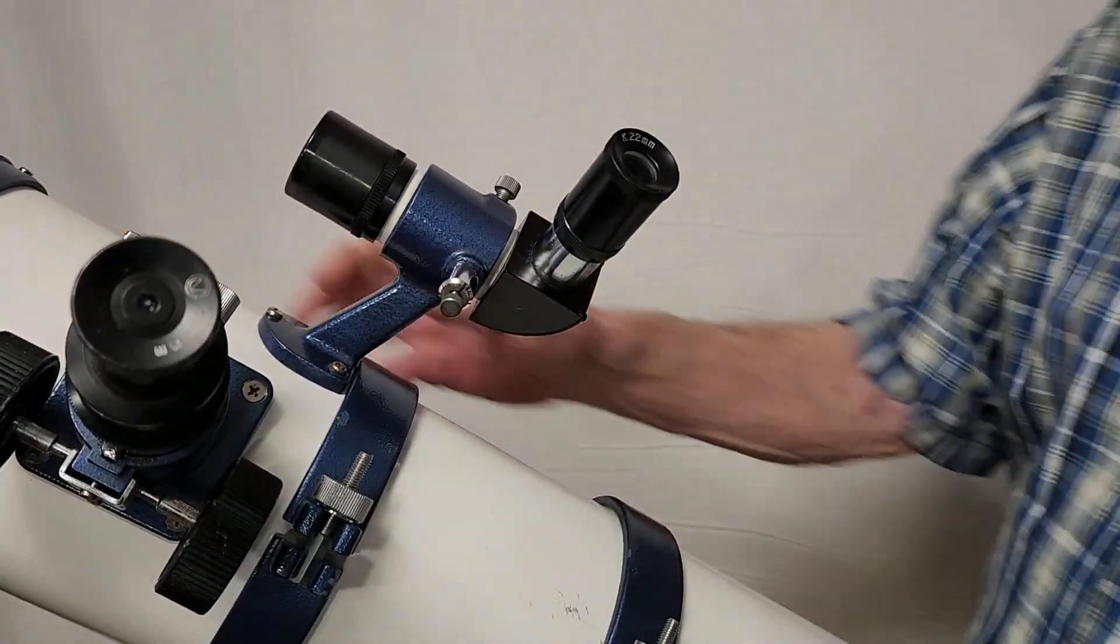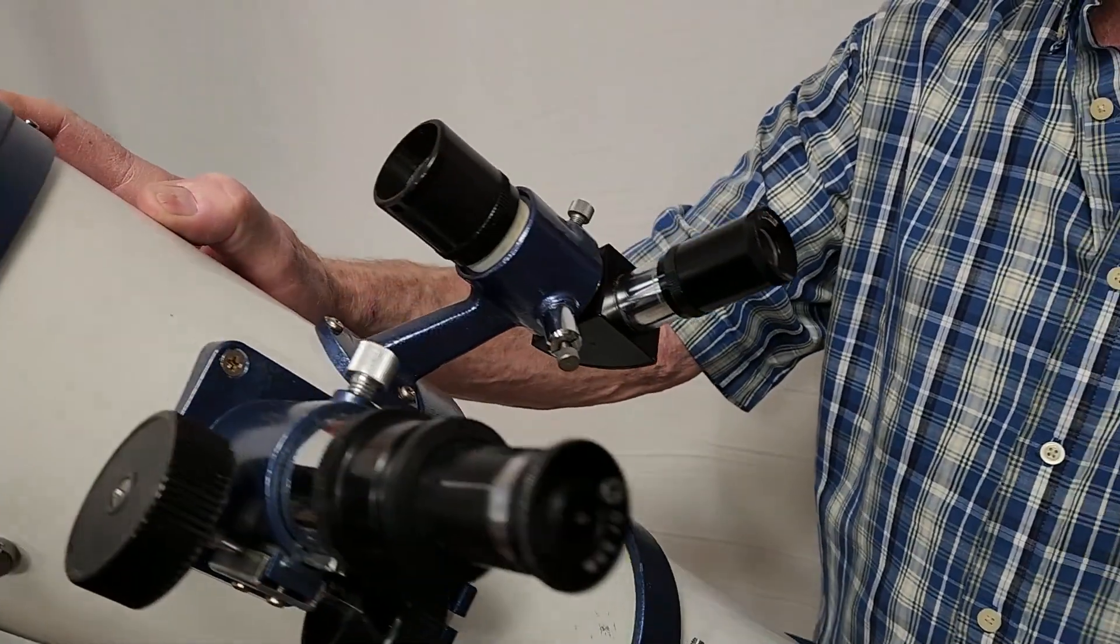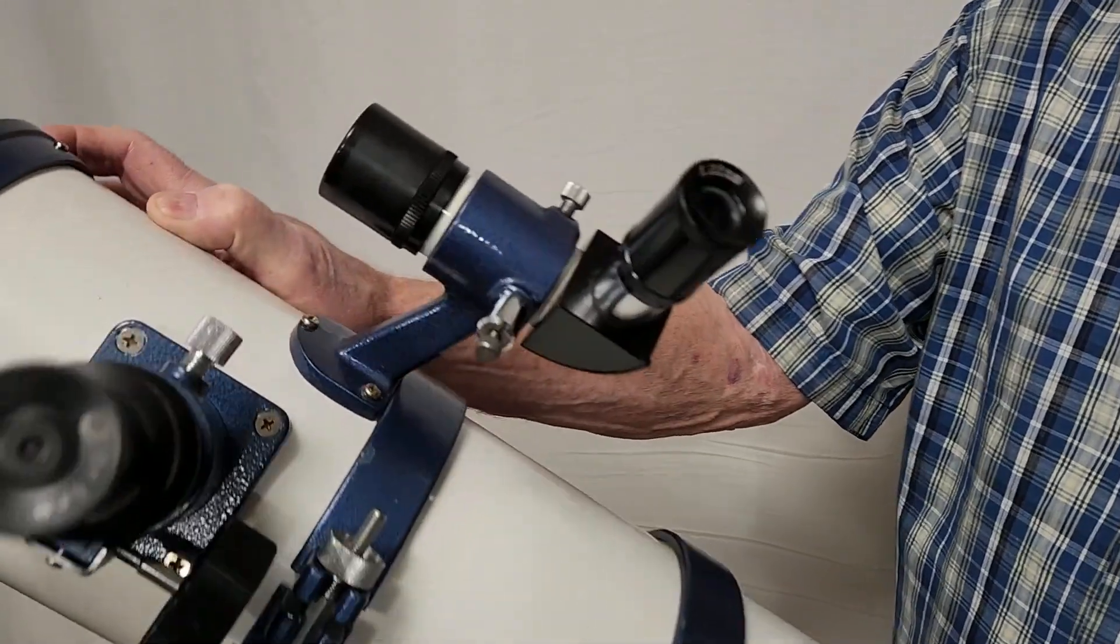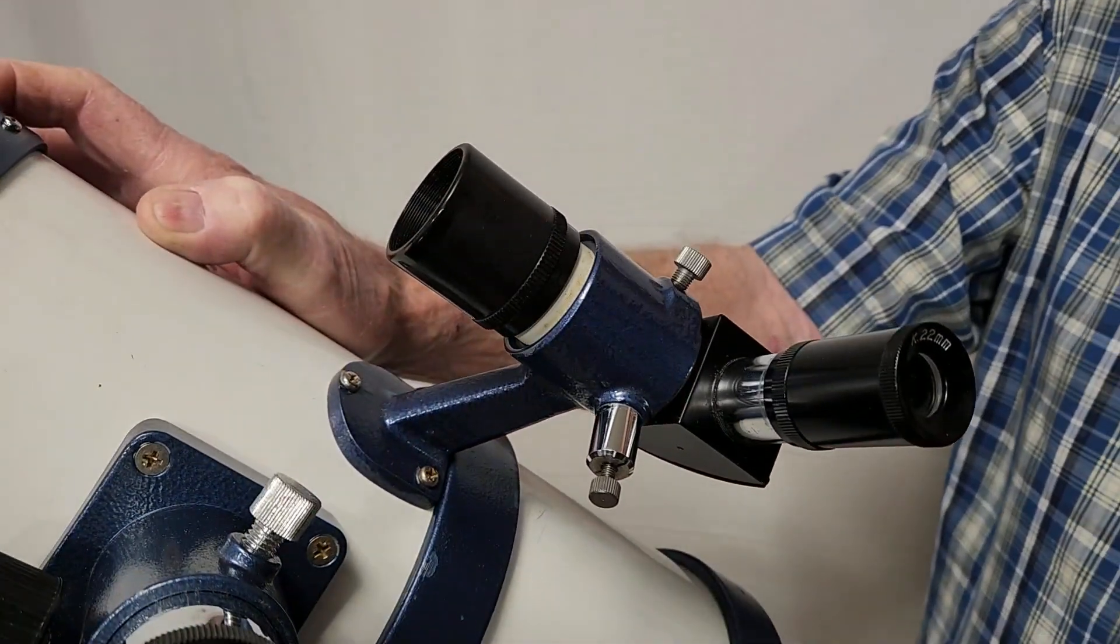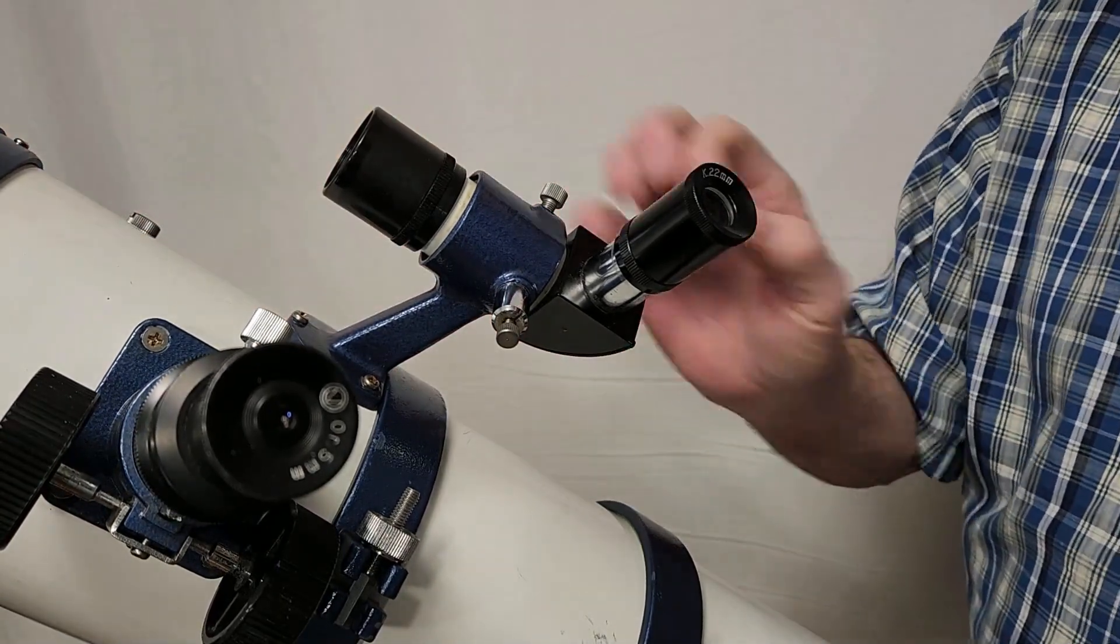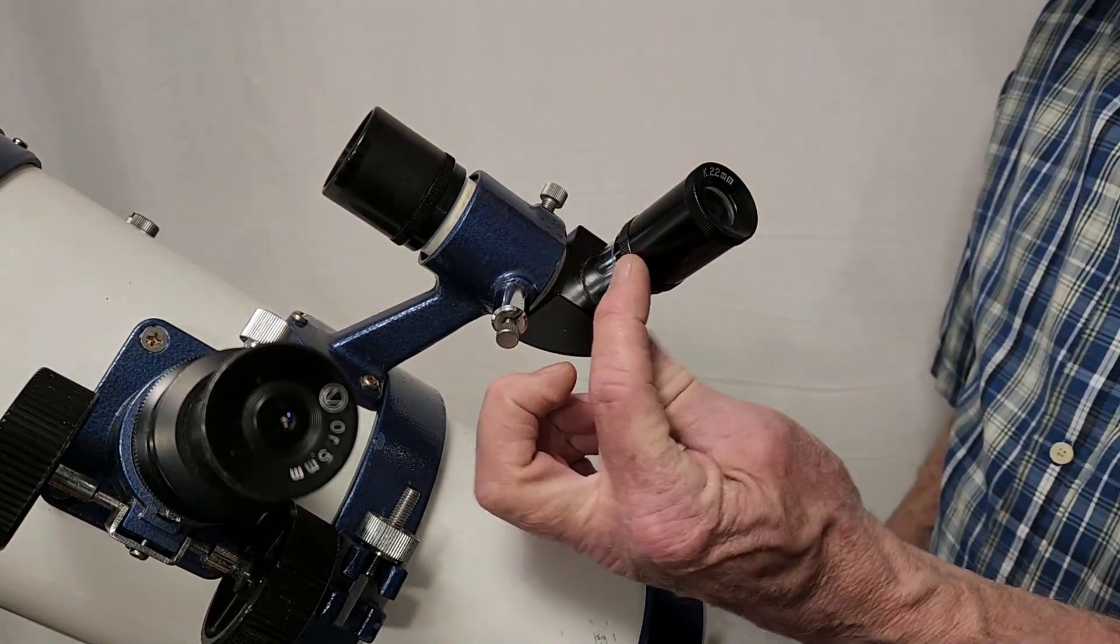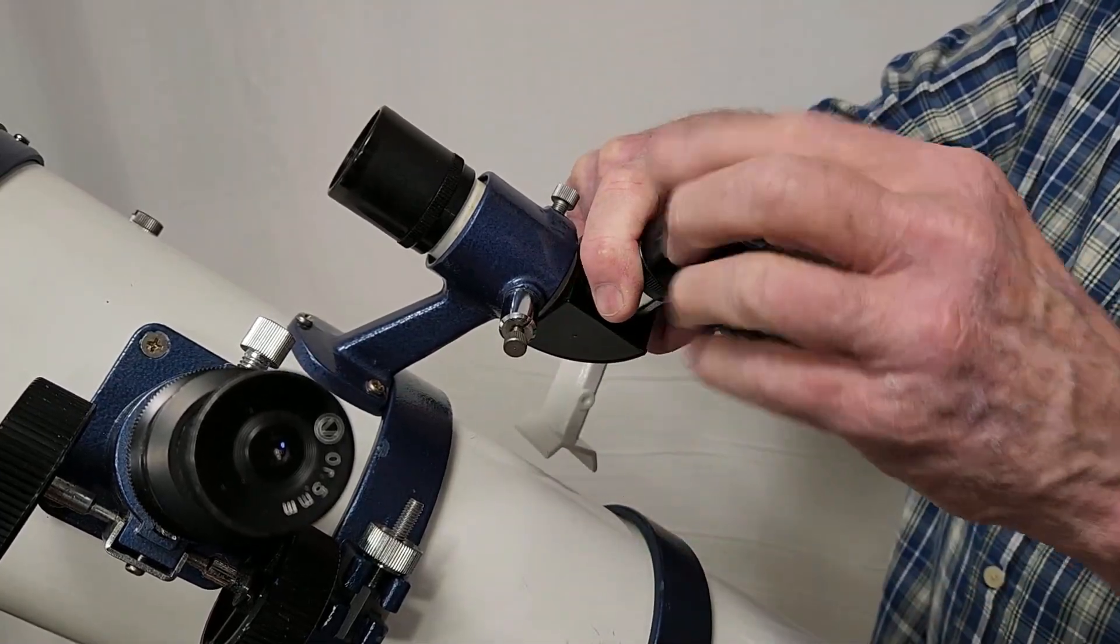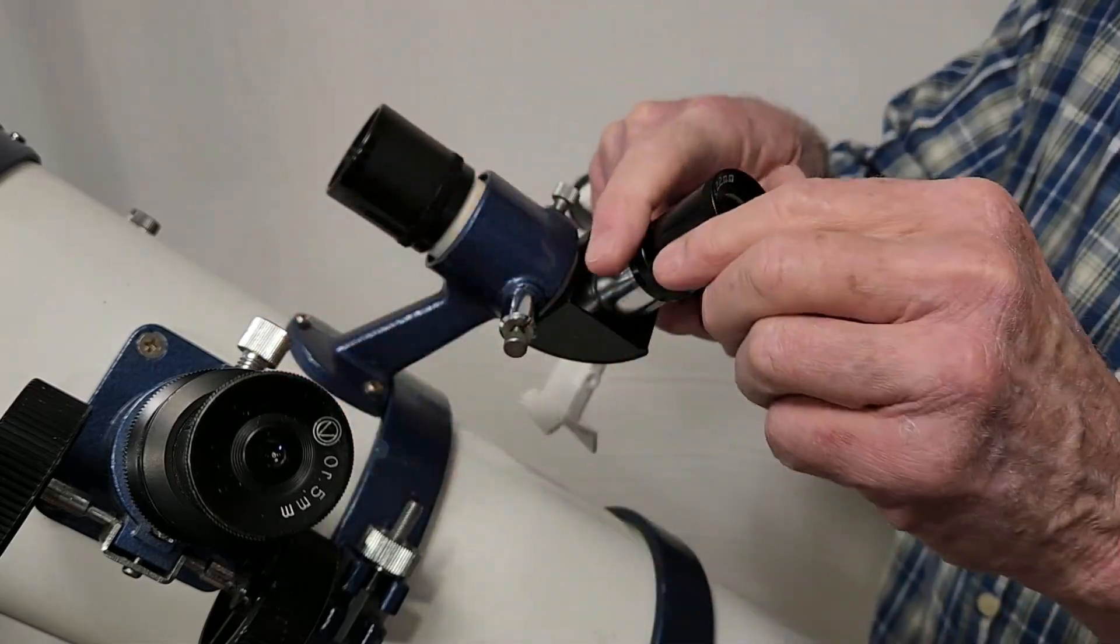Take a look at the finder on this scope. First of all, it's a right angle which is unusual. Not exactly my favorite idea but it's executed well. It's got a nice easy mechanism for focusing the reticle right here. That's how you focus that. And you focus the whole telescope right there.